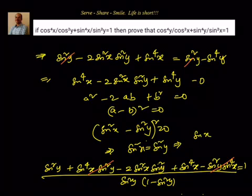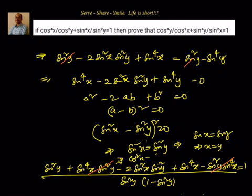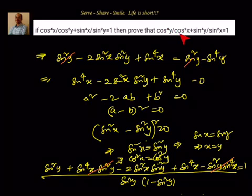That means sin x = sin y, or x = y. We can also say sin²x = sin²y implies cos²x = cos²y. Now once we have sin²x = sin²y and cos²x = cos²y, we can take x = y and substitute into the second equation: cos⁴y / cos²y + sin⁴y / sin²y = cos²y + sin²y = 1.